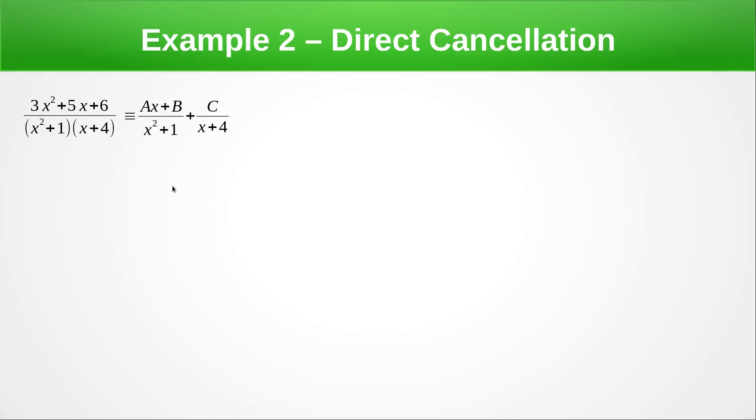We're now going to multiply by this denominator on the left hand side. So what we're going to do is we're going to let x = -4 because we really like to get rid of this term here. So if that becomes zero this all goes then we're left with 40 - 20 + 6 = 17C so C = 2. And now we're going to use direct cancellation we're just going to let x = 0 to get rid of this A term and then we're only left with B's and C's and we already know what C is so we end up with 6 = 4B + C so B must equal 1.